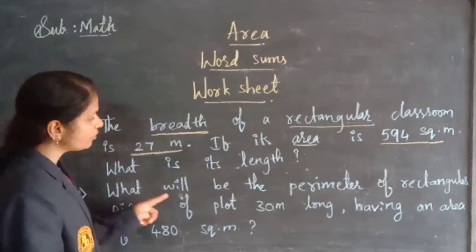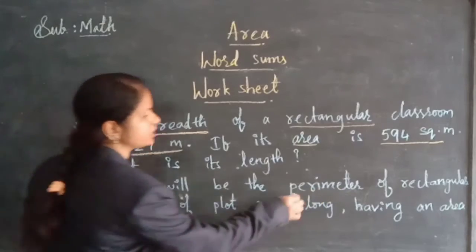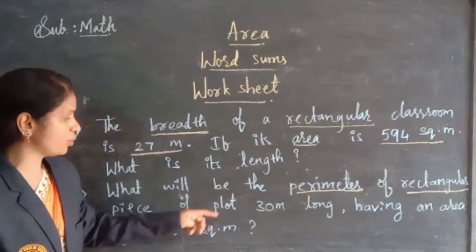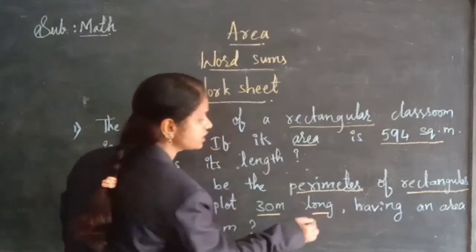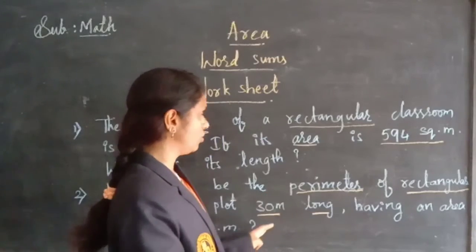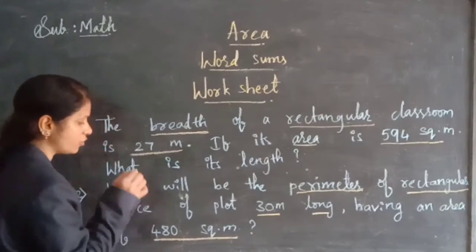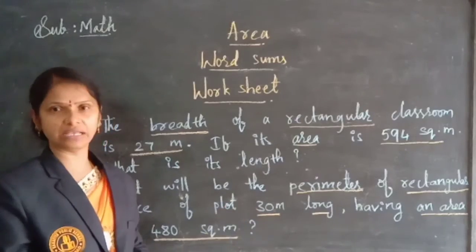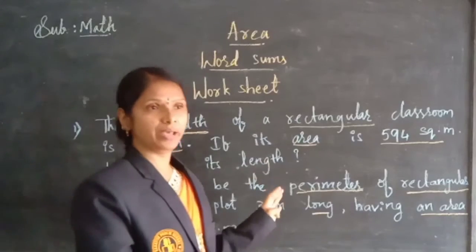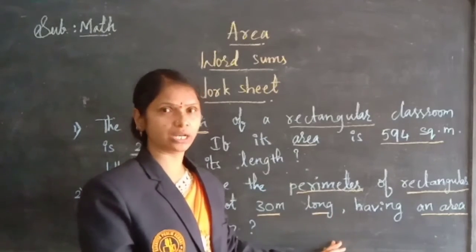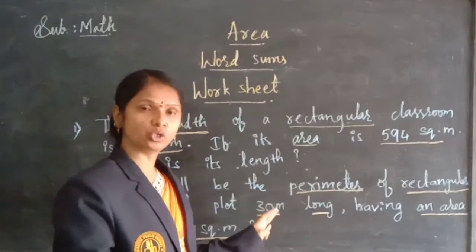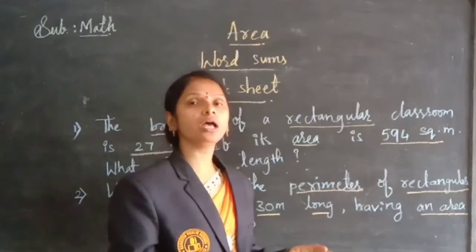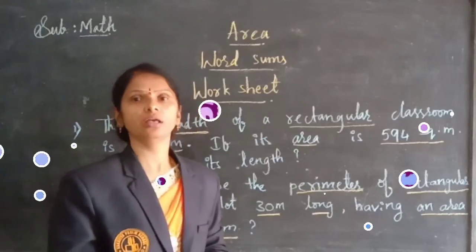Coming to the second worksheet problem: what will be the perimeter of a rectangular piece of plot that is 30 meters long and has an area of 480 square meters? Using the given area and length, find the breadth. After getting the breadth, substitute both length and breadth values into the perimeter of rectangle formula to find the answer. Thank you.